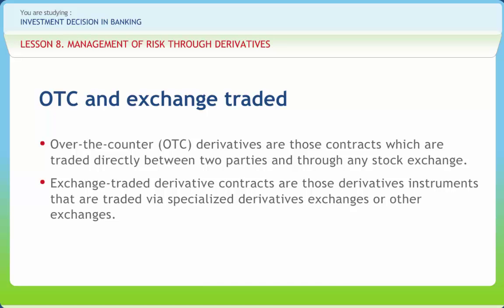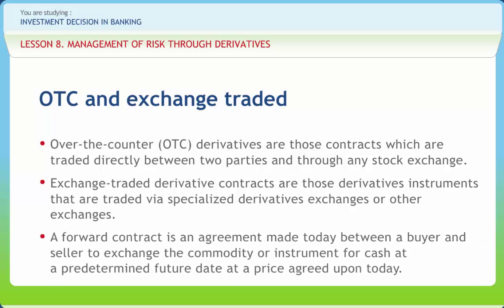A forward contract is an agreement made today between a buyer and a seller to exchange the commodity or instrument for cash at a predetermined future date at a price agreed upon today — called the forward price. Two parties agree to trade at some future date at a stated price and quantity; no money changes hands at the time the deal is signed. Forward contracts are affected by problems such as lack of centralization of trading, liquidity, and counterparty risk.